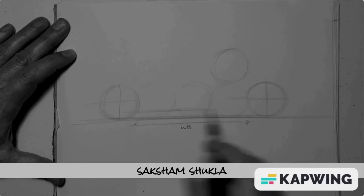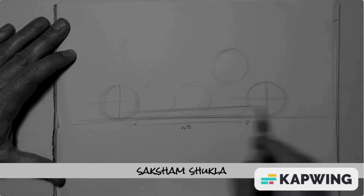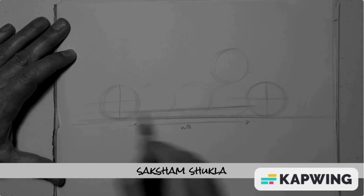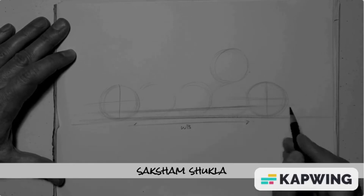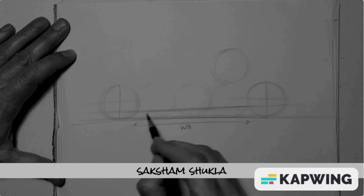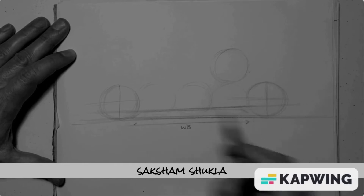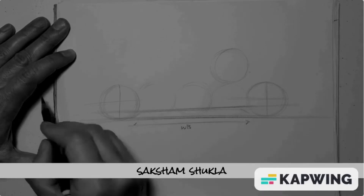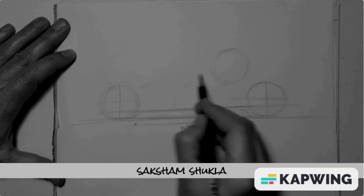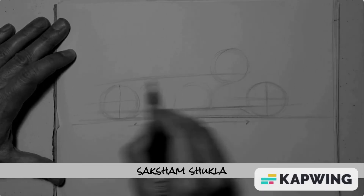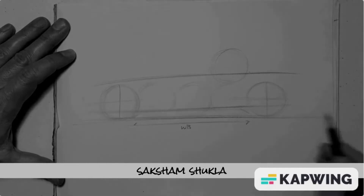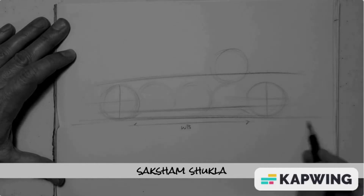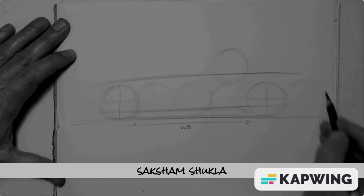The bottom of the vehicle — being that this is a sedan and fairly low to the ground — will be somewhere between the wheel center and the ground. That's the line we call the rocker. Then we draw what's called the belt line, which is where the window sill is.